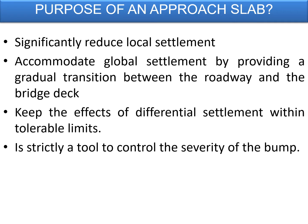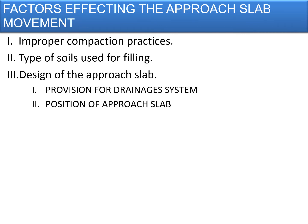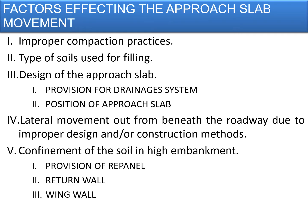Factors affecting approach slab movements include: improper compaction practices leading to settlement; types of soils used for filling; design of the approach slab including provision of drainage systems; position of the approach slab, whether at the top of the bridge surface or buried under the approach; lateral movement from beneath the roadway due to improper design or construction methods; and confinement of soils in high embankments, such as whether confined using a re-panel, return wall, or wing wall.